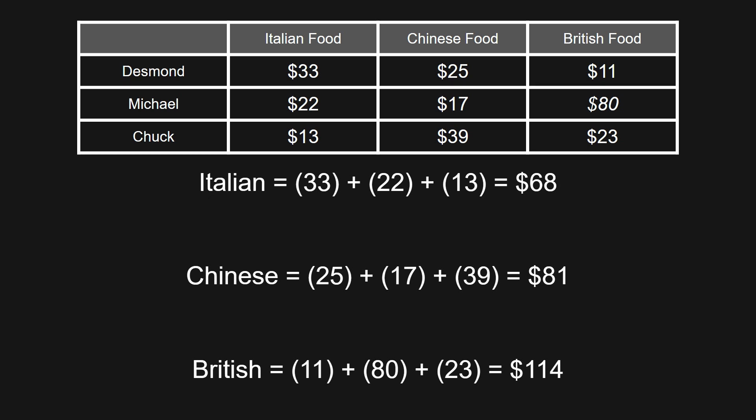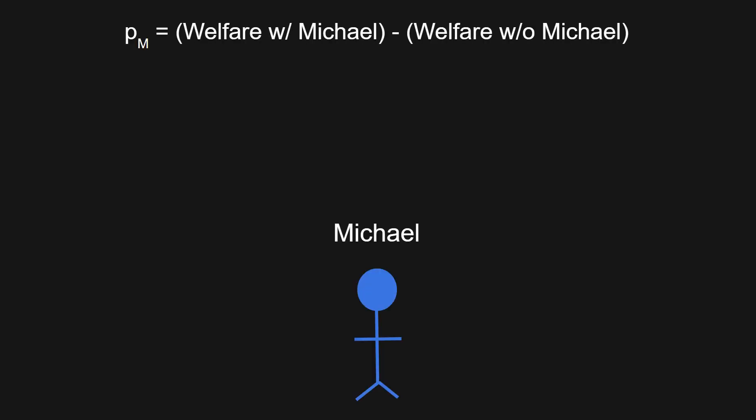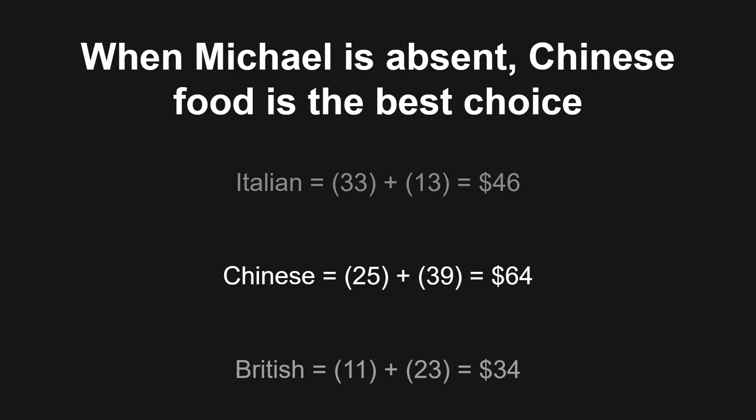We'll first need to find the outcome that the VCG mechanism would pick under these new reported values. Because Michael only lied about his value for British food, the mechanism now thinks that British food is the best outcome, supposedly yielding $114 worth of social welfare for the group. To solve for Michael's payment, we also need to find the outcome we would have chosen if he was absent. Adding together all values while ignoring Michael, we find that Chinese food ends up being the best choice, yielding $64 worth of social welfare for the others — the same as in the original problem.